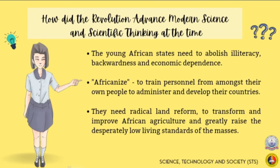How did the revolution advance modern science and scientific thinking at the time? The young African states needed to abolish illiteracy, backwardness, and economic dependence. In order to train their personnel from amongst their own people to administer and develop their countries, they needed to Africanize their civil services and administration. They were left behind by colonialism and needed to catch up with the advanced countries through rapid industrialization and economic development, land reform, improved African agriculture, and raising the low living standards of the masses.